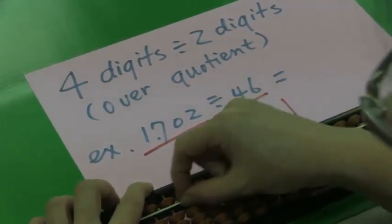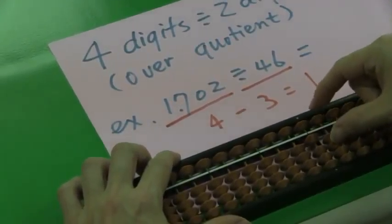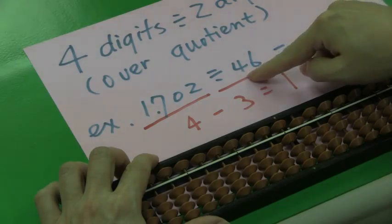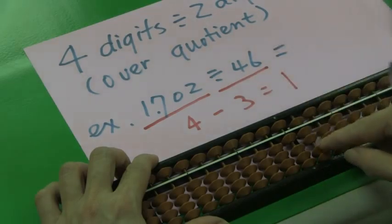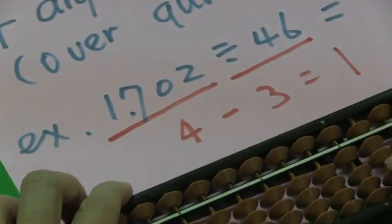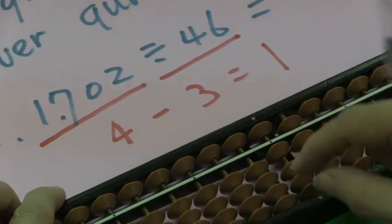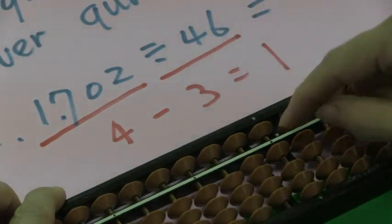Let's try this question. 1,702 divided by 46. Here, 17 divided by 4. We know the quotient is 4. 4 times 4 is 16. The remainder is 10.